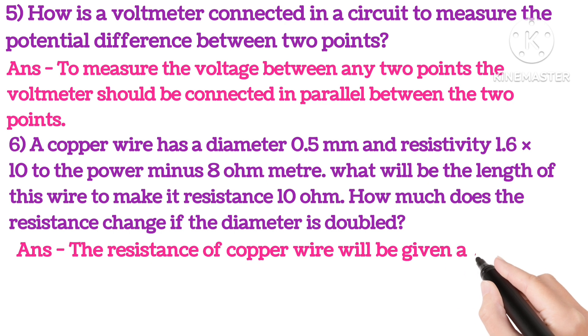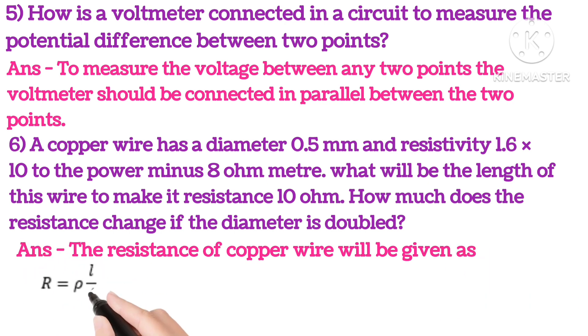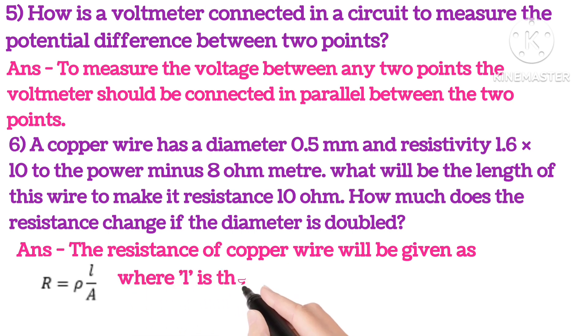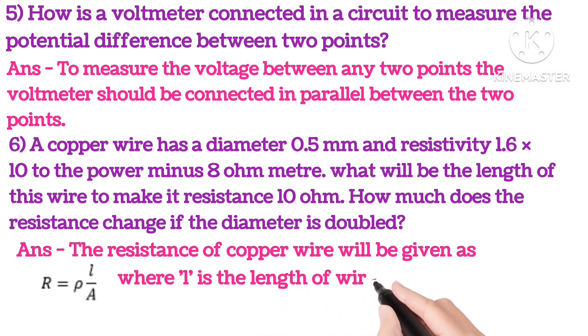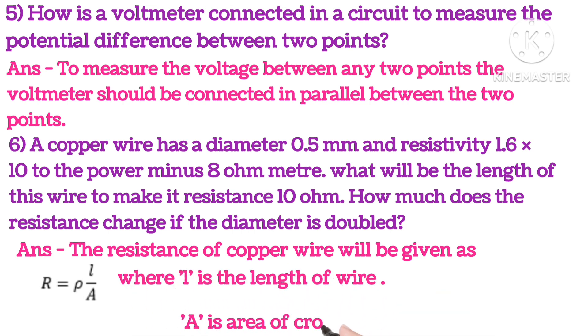Answer is: the resistance of copper wire will be given as R equals rho L upon A, where L is the length of the wire and A is the area of cross section of wire.